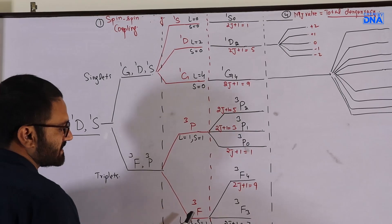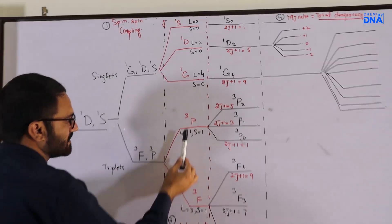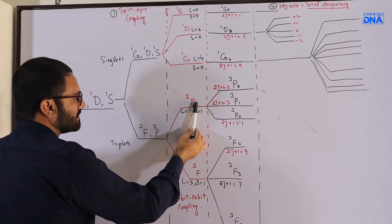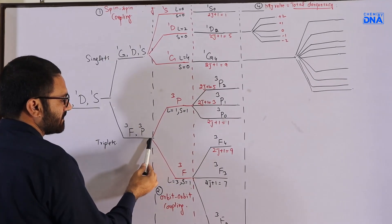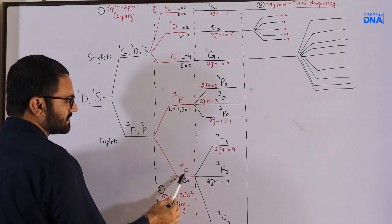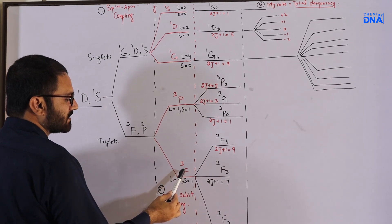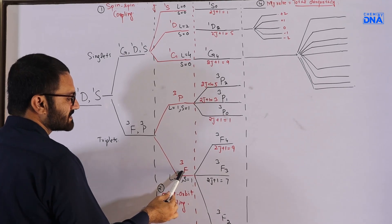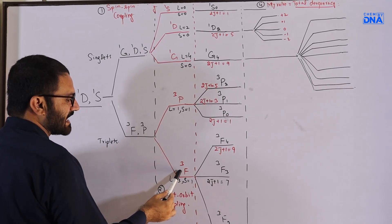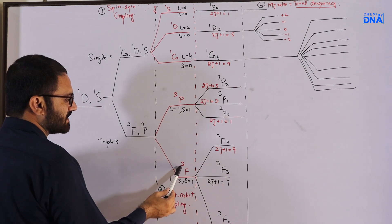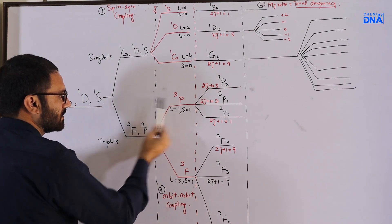In a similar pattern for the triplets, ³P will be placed higher in energy and ³F falls lower in energy. This is also in accordance with the principle that term symbols having greater L value fall lower in energy, hence ³F is lower in energy compared to ³P.